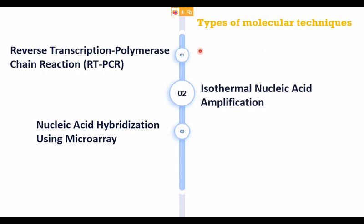There are basically three important molecular techniques available for the diagnosis of COVID-19. The first is Reverse Transcription Polymerase Chain Reaction, shortly called RT-PCR, which is the most important and familiar test for COVID-19 diagnosis. The other two are isothermal nucleic acid amplification and nucleic acid hybridization using microarray — though the latter is not very popular.